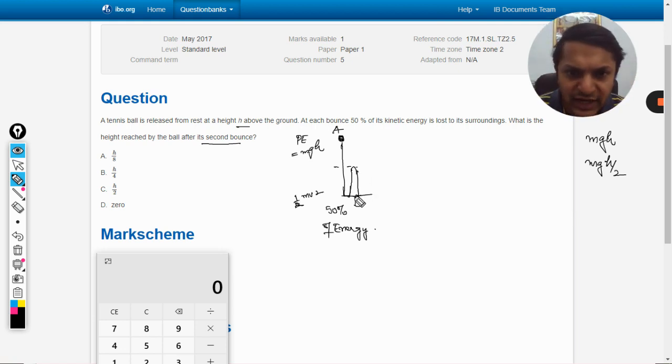Now it goes for the second bounce and it again moves up. 50 percent of whatever energy it was having has been lost, so 50 percent of this will be mgh by 4, half of the half. So mgh by 4, it means now it will again attain the height which is h by 4. So h is the total energy, it is h by 2, and then it is h by 4.